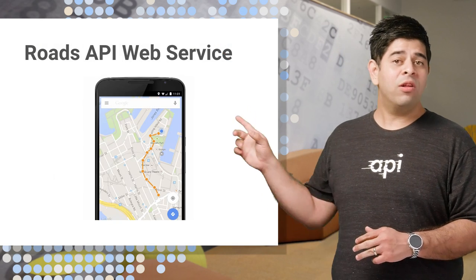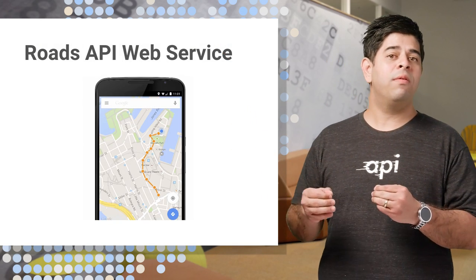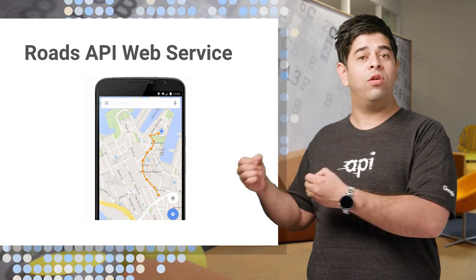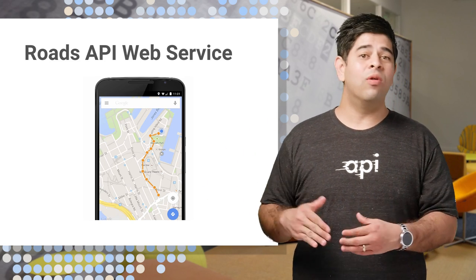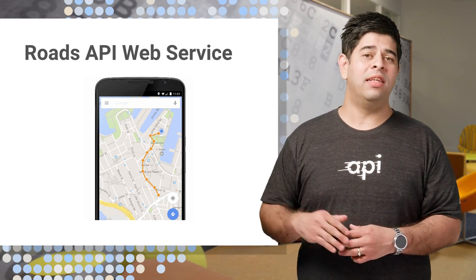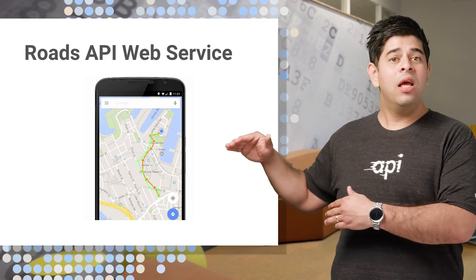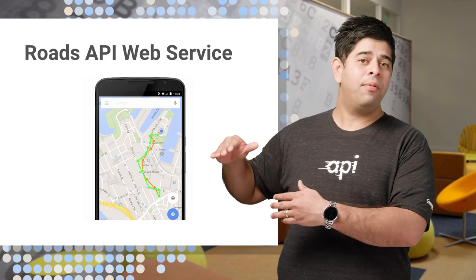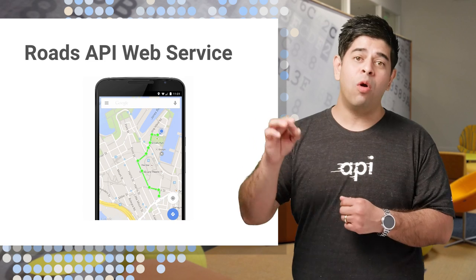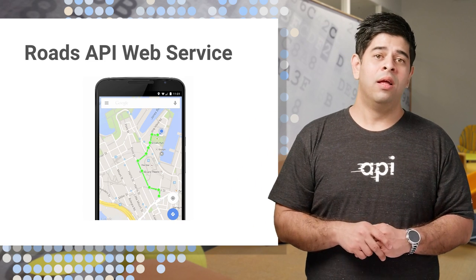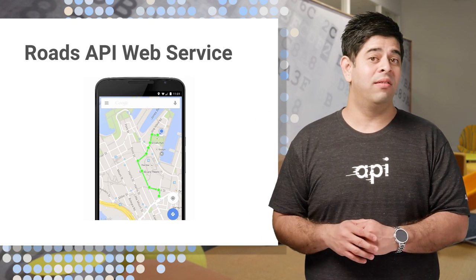I now want to talk about the Roads API. It's used for when you use your GPS on your phone. Often, that signal can be quite noisy — the GPS location. With this API, we can snap the locations that our phone gives us to actual roads in the real world. This can also make for a really nice user experience.